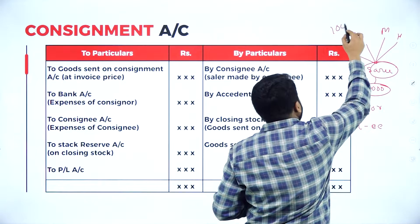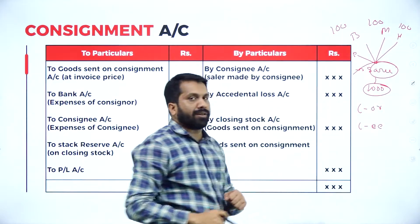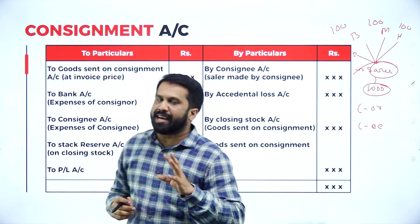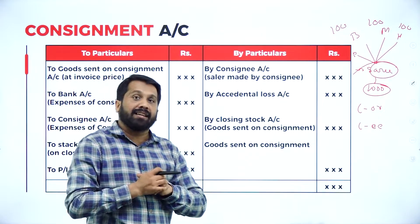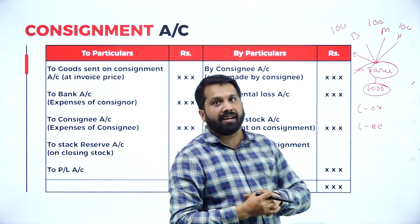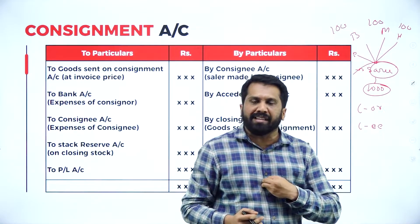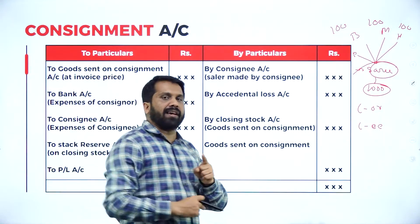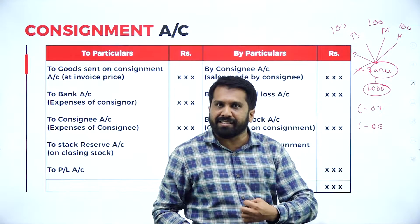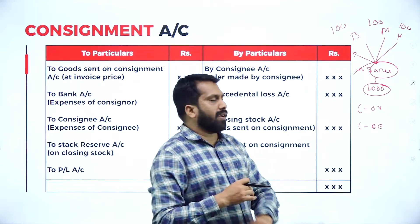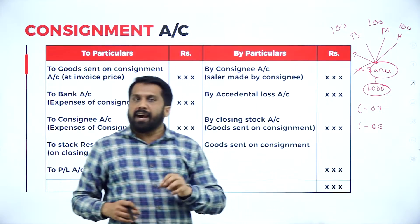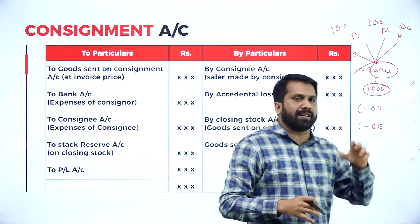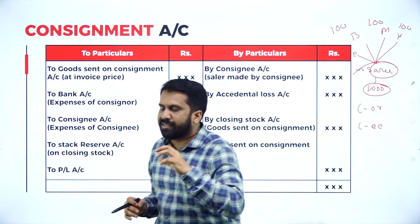Each city I'll give 100 saris. So I'll take 10 cities total, appointing one agent per city. Each agent will be given 100 saris. The agreement between me and that agent is very simple: the agent has to sell my saris at whatever price I told him. For example, each sari costs 800. I'll tell him: I have given you 100 saris — you have to sell them for 800 each.